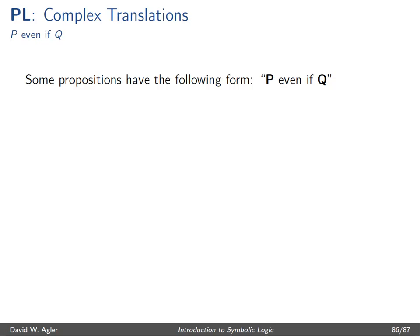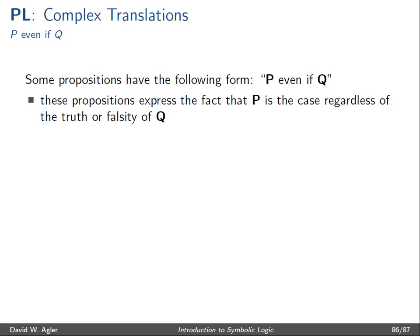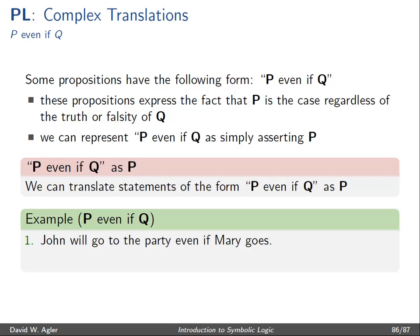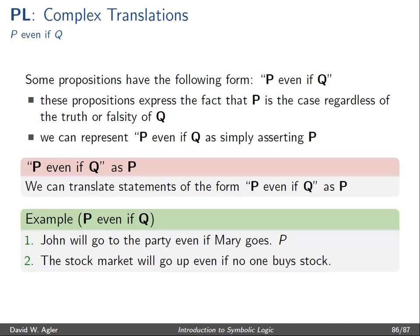Lastly, and this is the easiest one: some propositions have the form 'P even if Q'. These say that P will be the case regardless of the truth or falsity of Q. So 'P even if Q' is simply asserting P, independent of Q. We can translate 'P even if Q' as simply P. For example, 'John will go to the party even if Mary goes' translates as simply J. Similarly, 'the stock market will go up even if no one buys stock' translates as simply S.